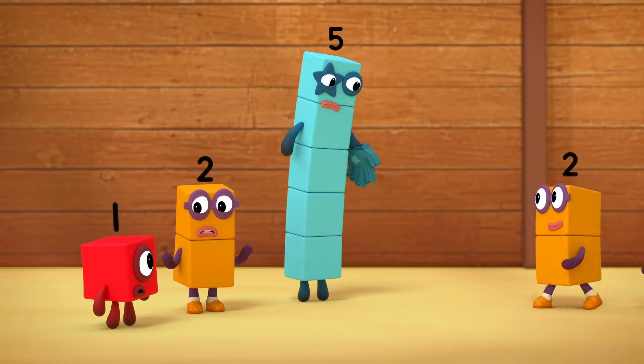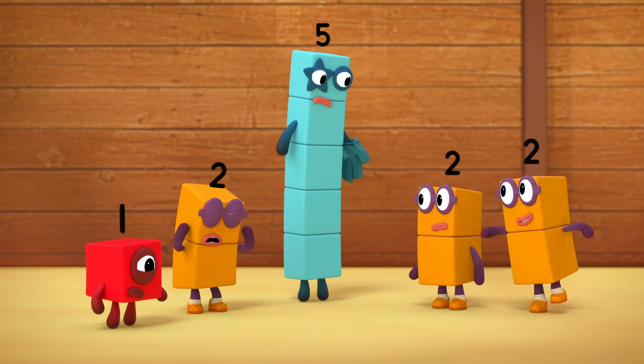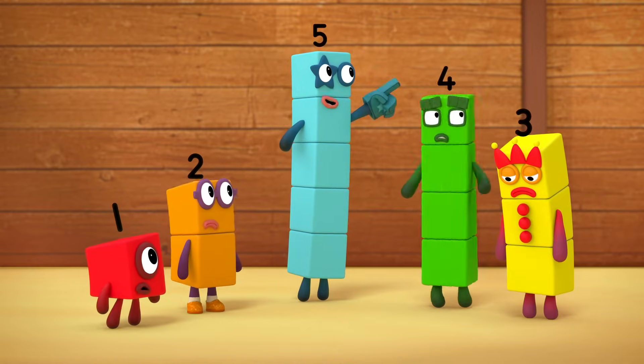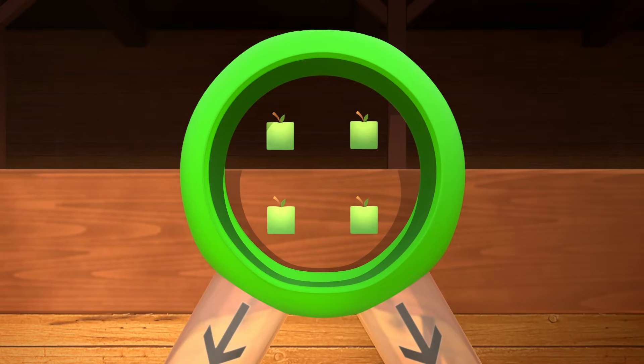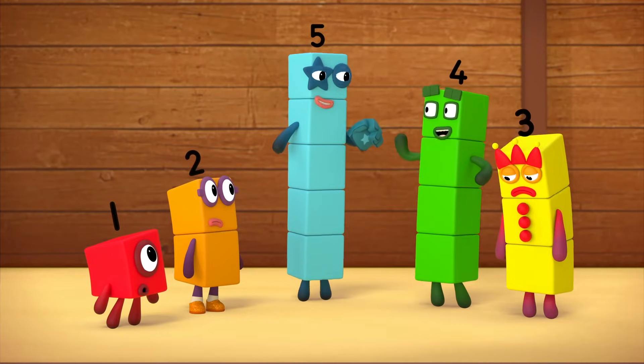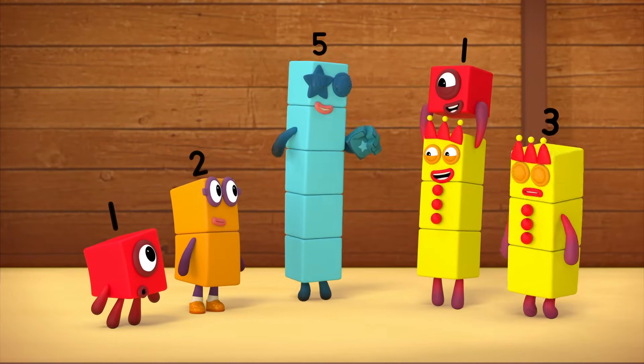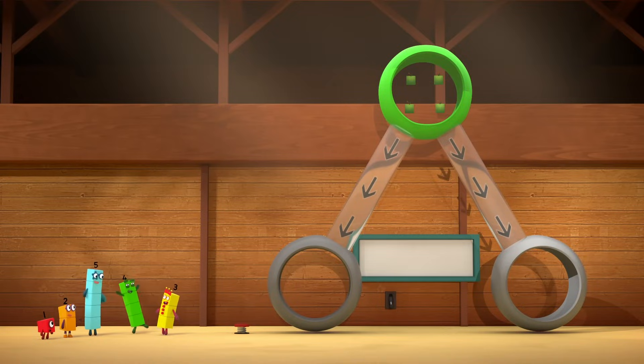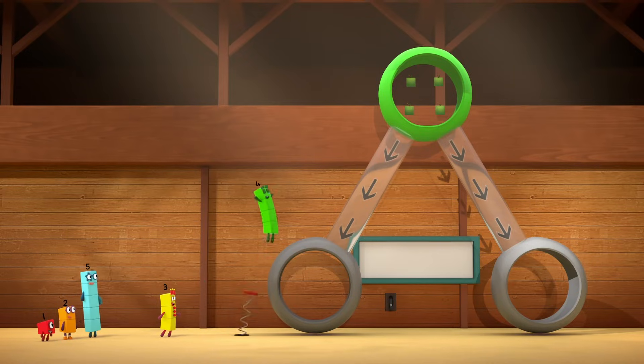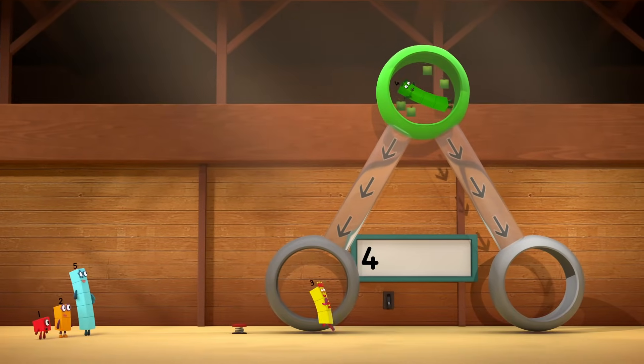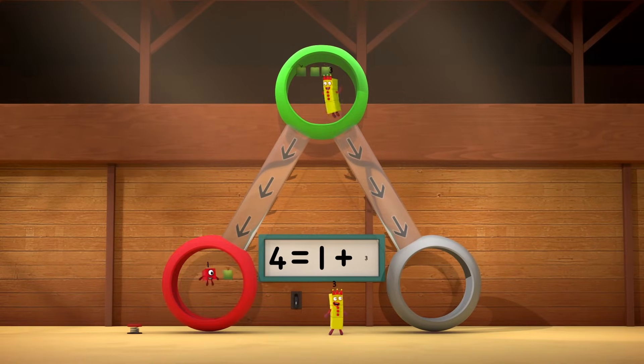Poor three. We need to find a way to make three apples come out. Look! Four new apples at the top. I know how to make three. Here I go! Four equals one plus three.